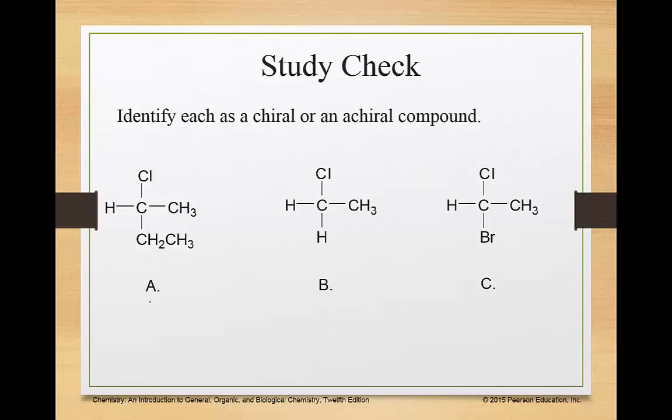So let's look here. Chlorine, methyl, ethyl, hydrogen. That's chiral because there's four different things coming off of it. Chlorine, methyl, hydrogen, hydrogen. Because those hydrogens are the same, that is achiral. That's not a chiral compound. Chlorine, methyl, bromine, hydrogen. That is chiral. So you're looking for four different things coming off of that carbon.